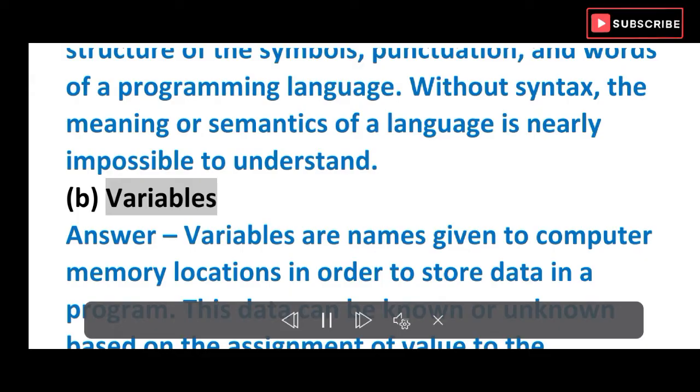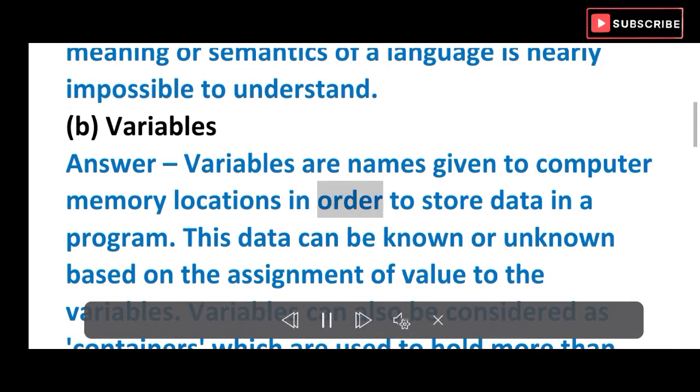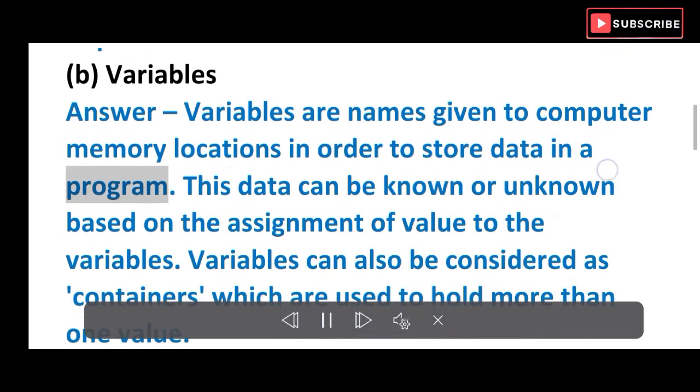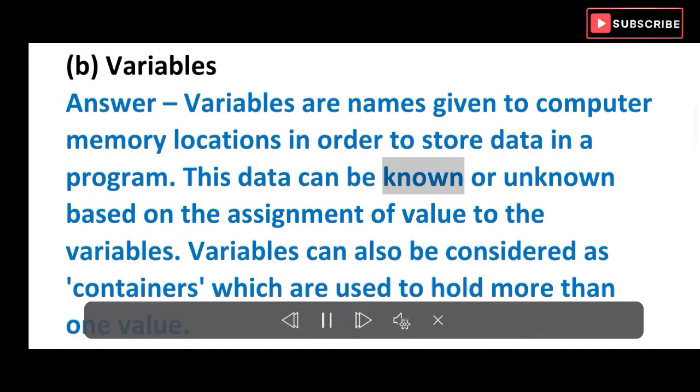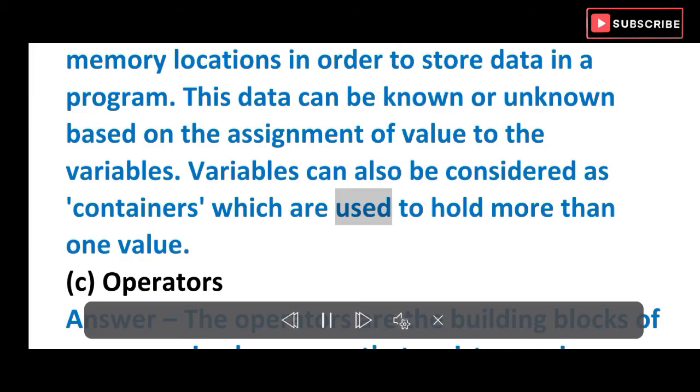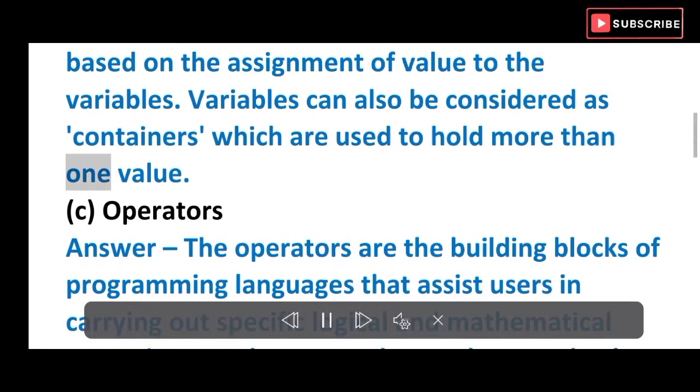(b) Variables. Answer: Variables are names given to computer memory locations in order to store data in a program. This data can be known or unknown based on the assignment of value to the variables. Variables can also be considered as containers which are used to hold more than one value.